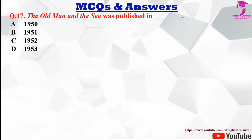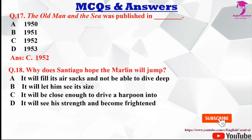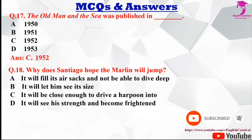Question number seventeen: The Old Man and the Sea was published in dash. Options are 1950, 1951, 1952, and 1953. The correct answer is C, 1952.